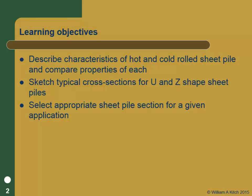There are two kinds of sheet piles: hot rolled and cold rolled sections, and it's important you understand the differences between those. There are also two different cross sections — a U and a Z cross section. There are also straight sheet piles, but they won't be used for any applications we're interested in. I've given you some locations to find the sheet pile data, and I'll actually have you pick sections for the sheet piles, so you'll need to be able to find those.